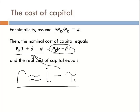We see that the cost of capital equals the price of capital times the real interest rate plus the depreciation rate. If the real interest rate goes up, the cost of capital goes up. If the depreciation rate goes up, the cost of capital goes up. And if the nominal price of capital goes up, the nominal cost of capital obviously goes up.